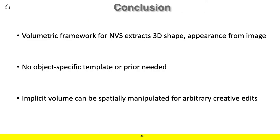In conclusion, the TBN is a volumetric framework for novel view synthesis that enables extracting the 3D shape and appearance of objects from images. As it uses a generic implicit volumetric bottleneck, no object-specific template or prior is needed. Finally, the implicit volume can be spatially manipulated to enable arbitrary creative edits of the image content while maintaining real-time performance during inference.